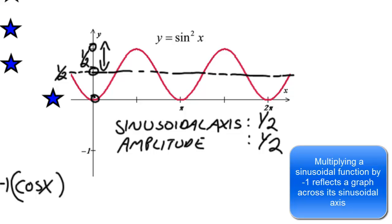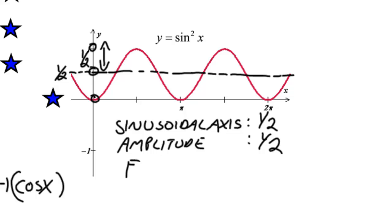And instead of starting at a maximum, we would start at a minimum. So, the function that this appears to be modeling is a negative cosine.